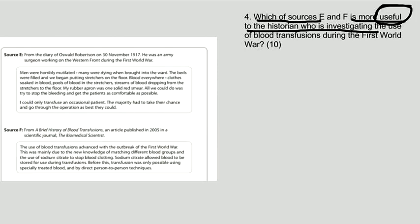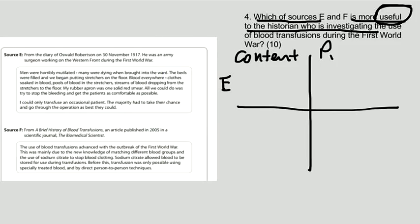So it's best when you're planning your answer to think: in source E, what is it in the content that is useful, and what is it in the provenance—that's the technical name for who wrote it and why—in source E and in source F.